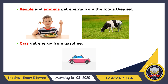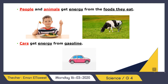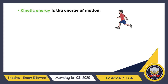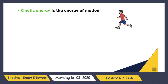Now we are going to study the different forms of energy. Energy has many different types. The first form is kinetic energy. Kinetic energy is the energy of motion. If you are moving, if an animal is moving, if anything is moving, its energy is called kinetic energy.